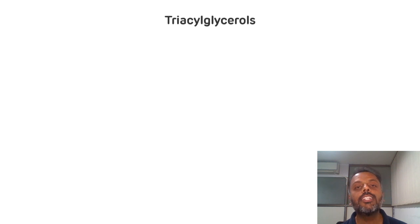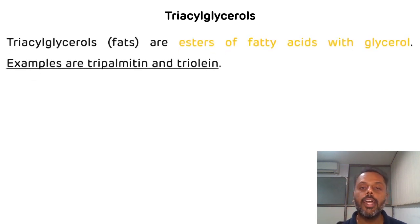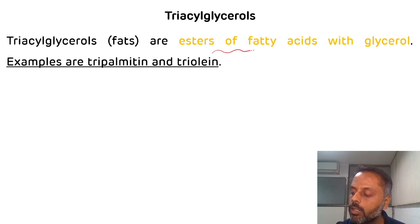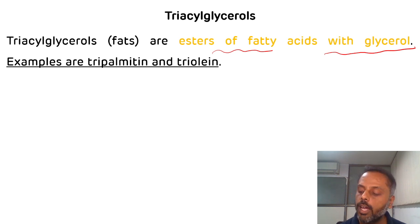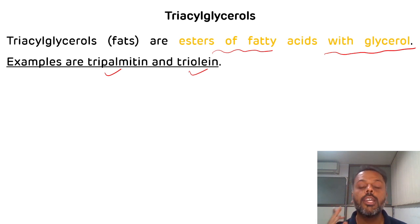Triacylglycerol is the ester of fatty acid with glycerol as alcohol. Examples of triacylglycerol are tripalmitin and triolein. Oils are also triacylglycerols, which are present in the form of liquid at room temperature — such as coconut oil and groundnut oil.